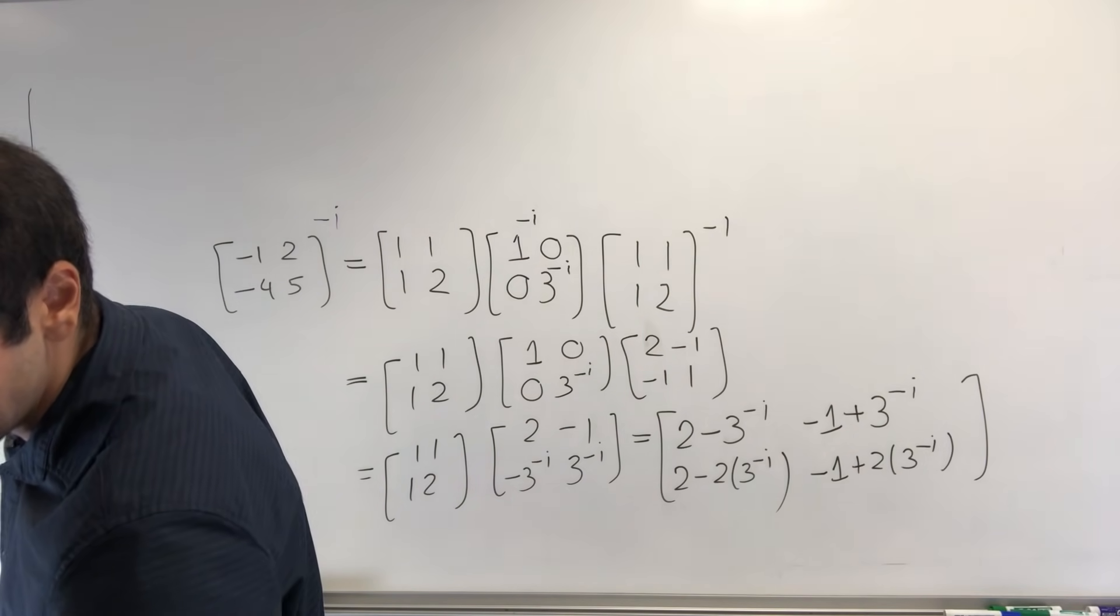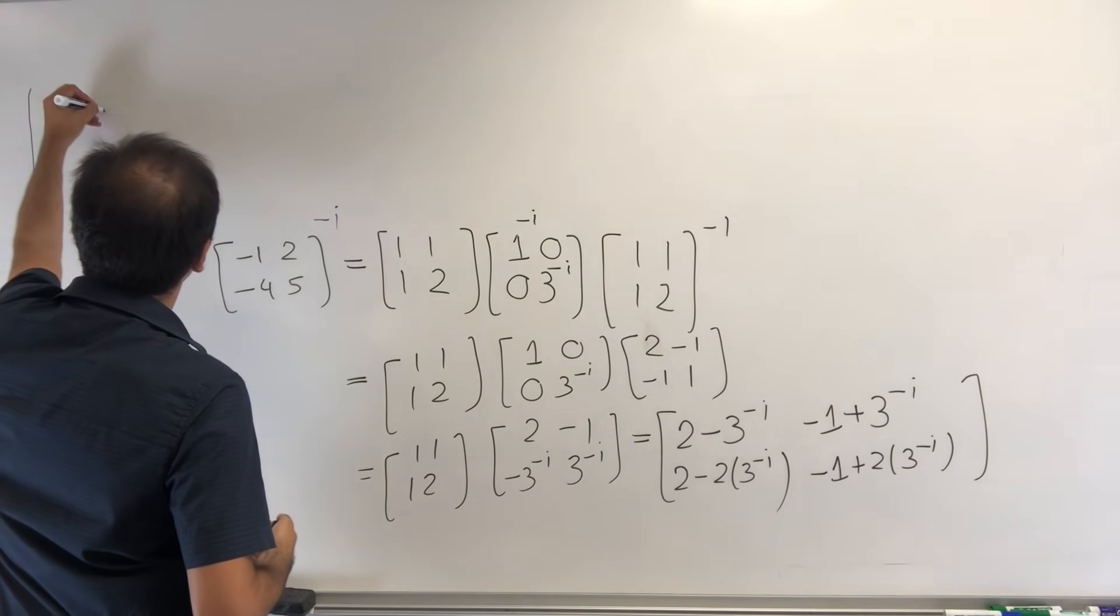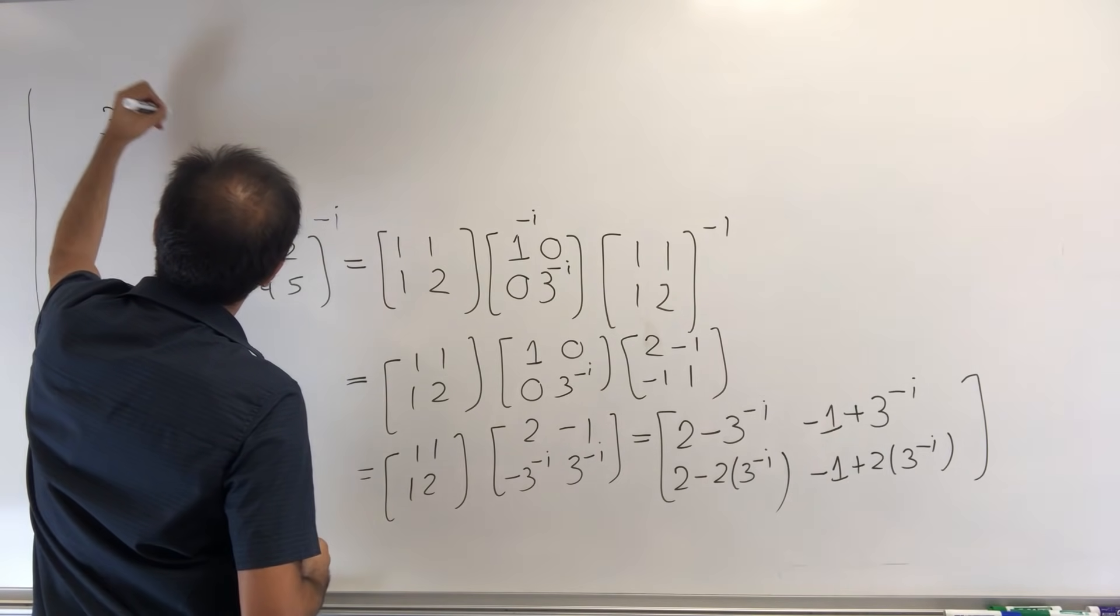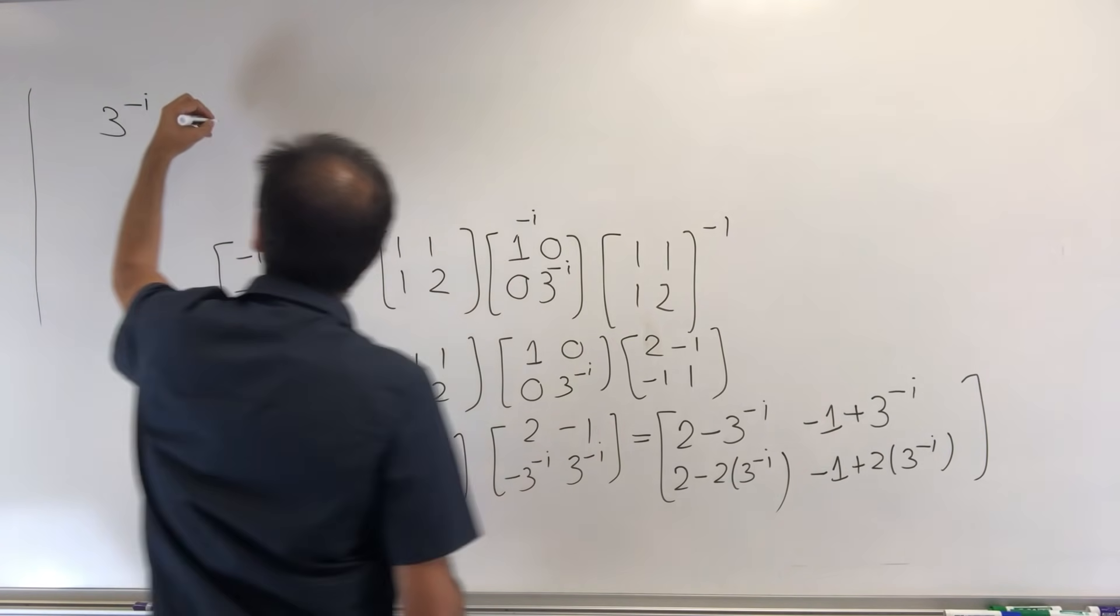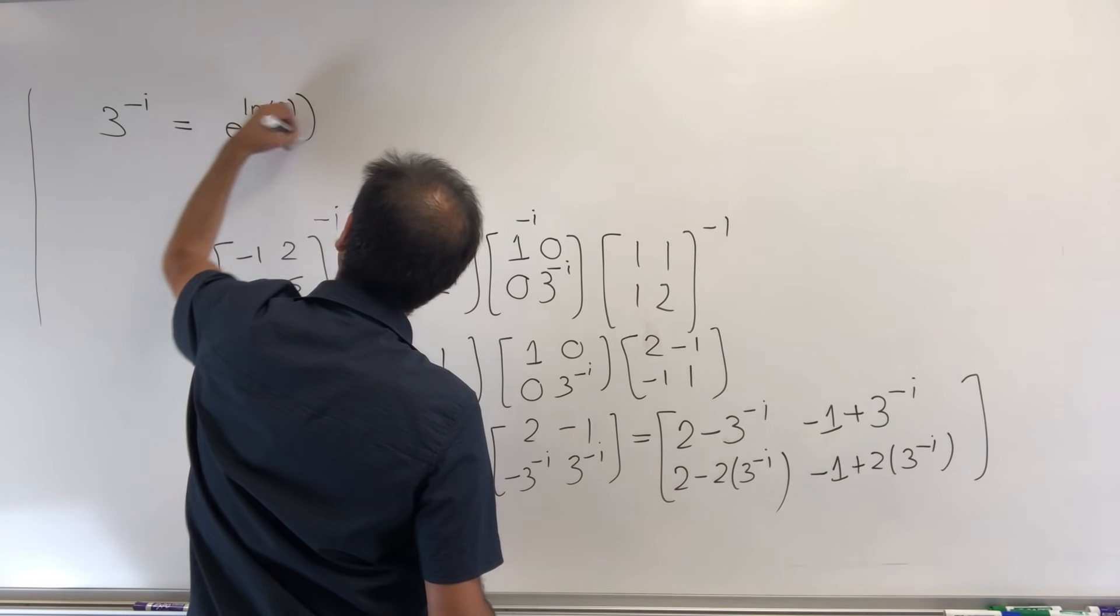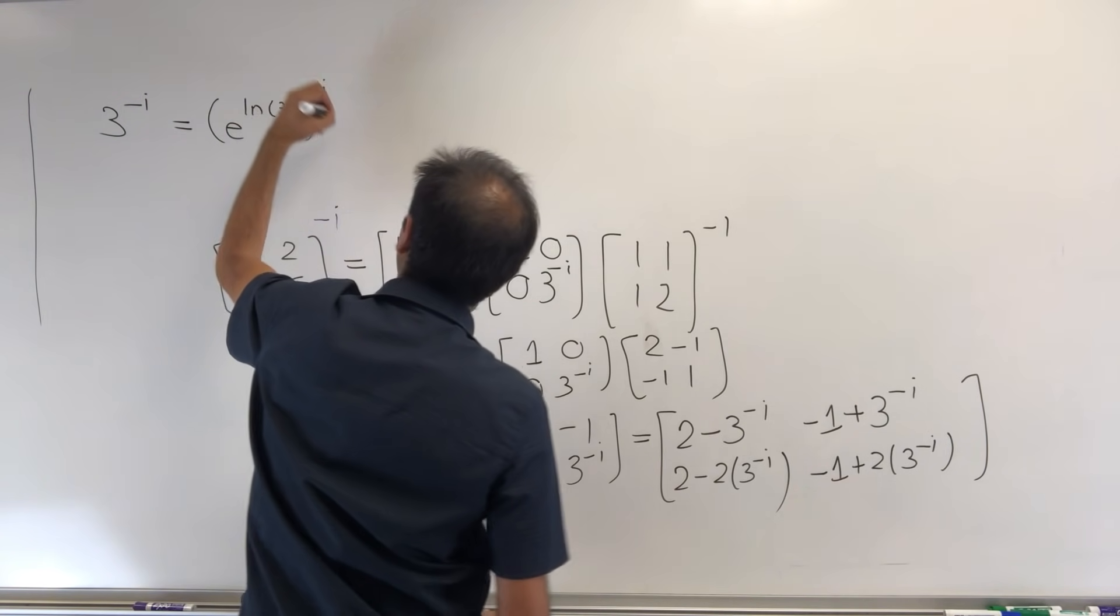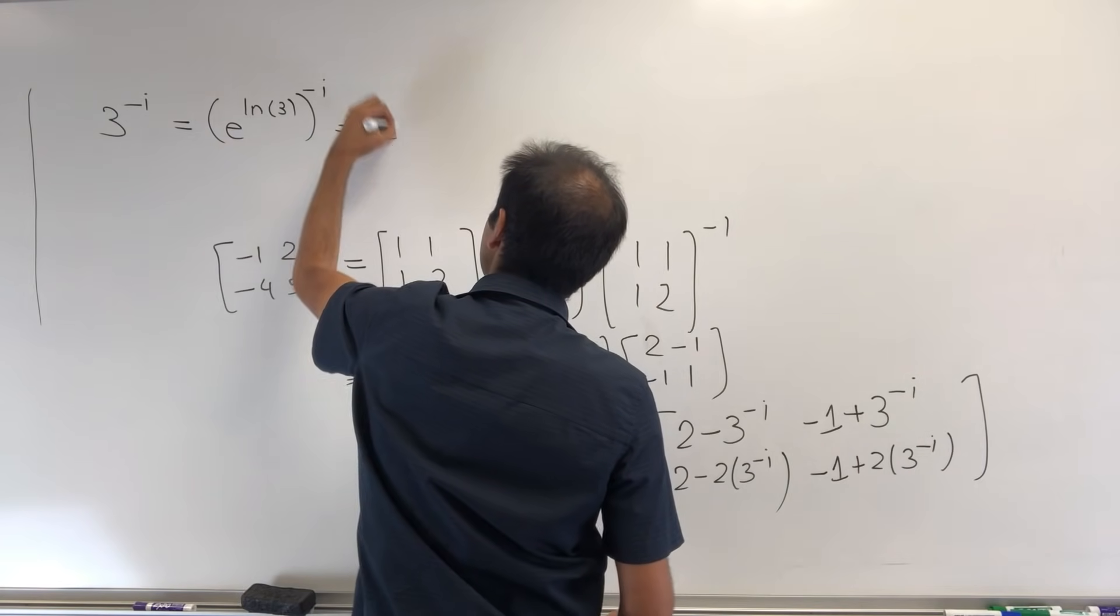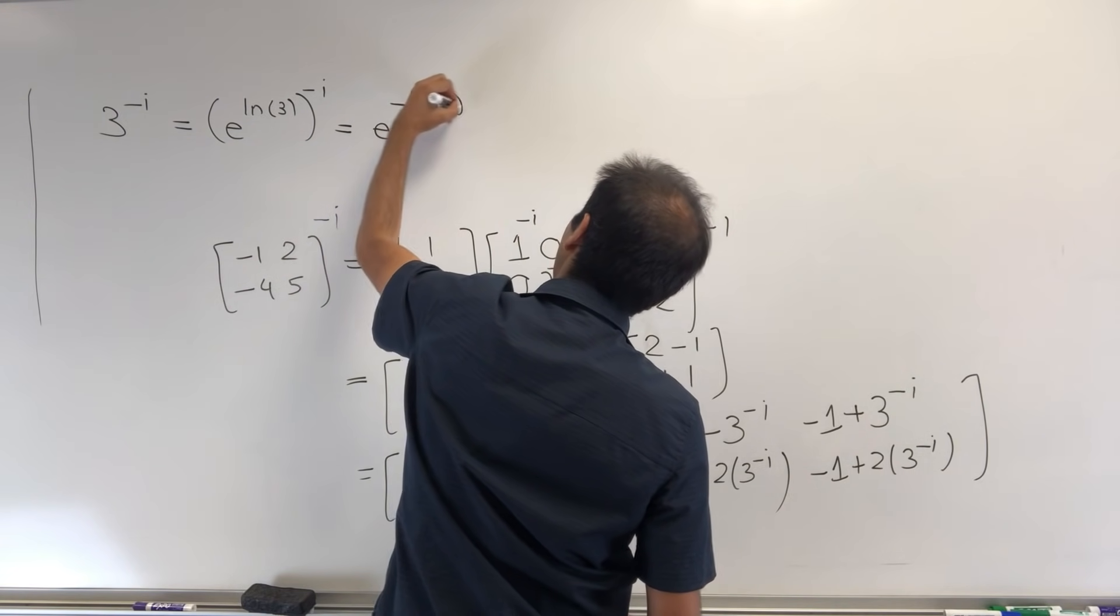So I want to remind you, 3 to the minus i. Well, 3 is e^(ln(3)), so this becomes e^(-ln(3)i).